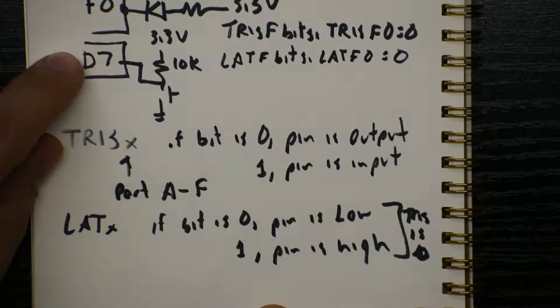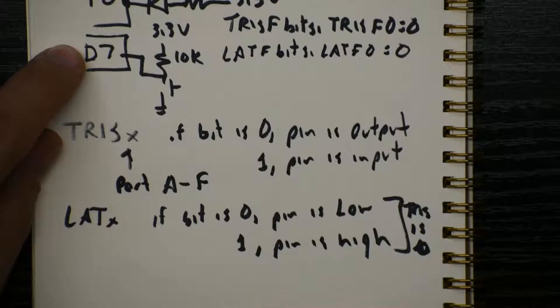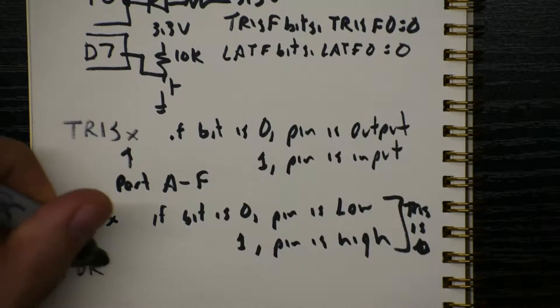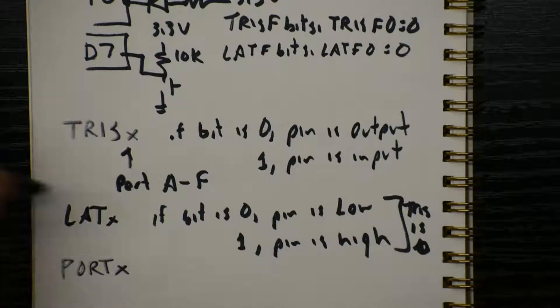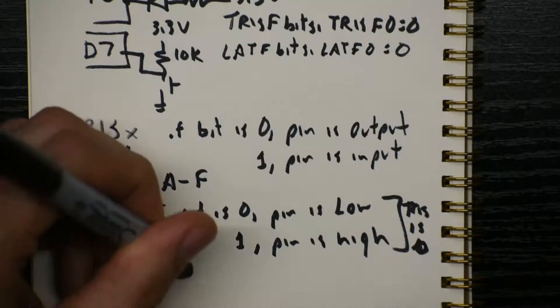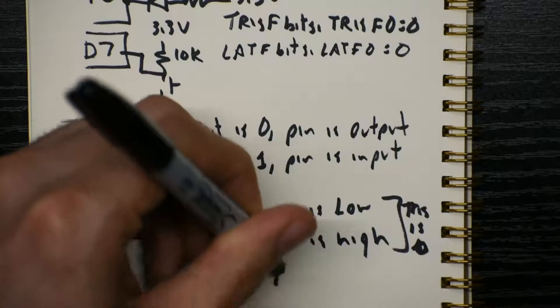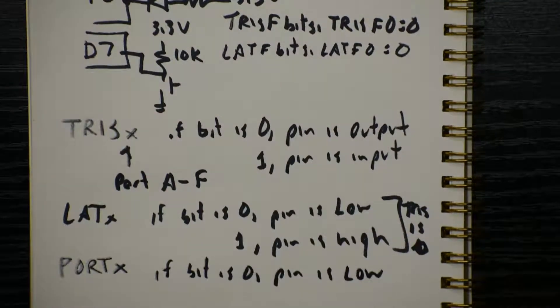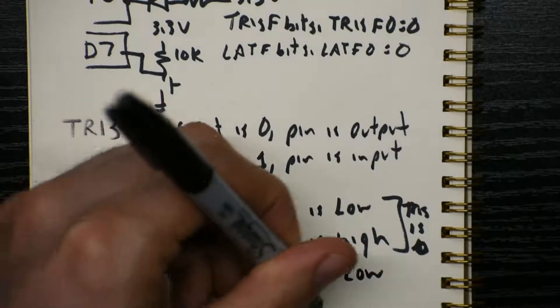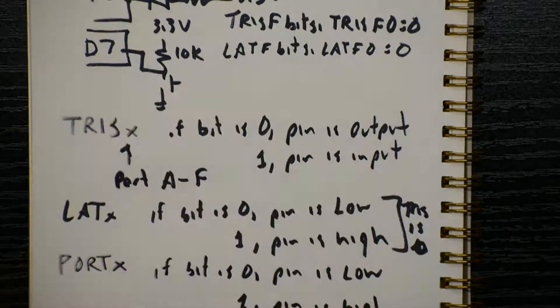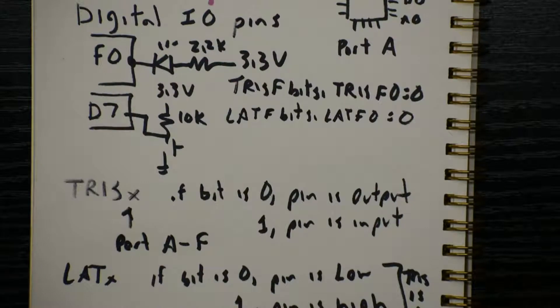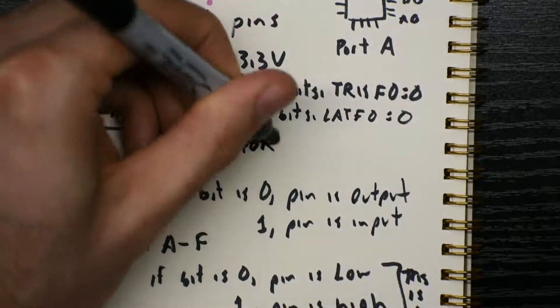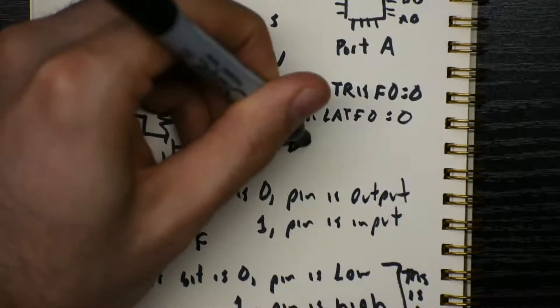And if the bit is 0, the pin is output. If the bit is a 1, the pin is input. So for example, for the F pin, we would say TRIS FBITS dot TRIS F0 equals a 0 to make it an output pin. So if we wanted to turn this LED on, we would want to make this voltage off. So we would say LAT FBITS dot LAT F0 equals 0. That would make current flow into the PIC and the LED would turn on.